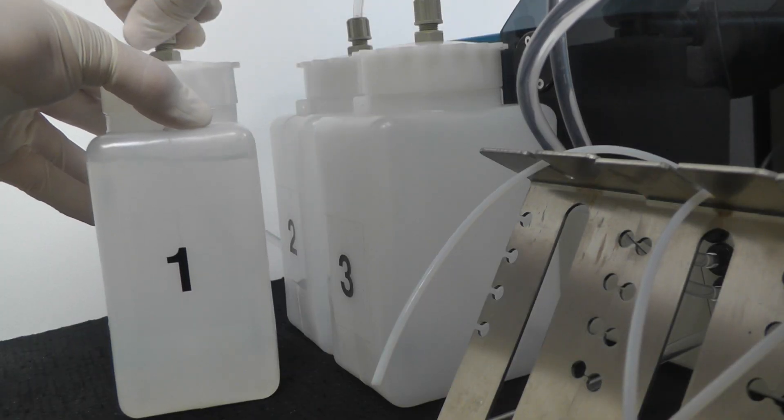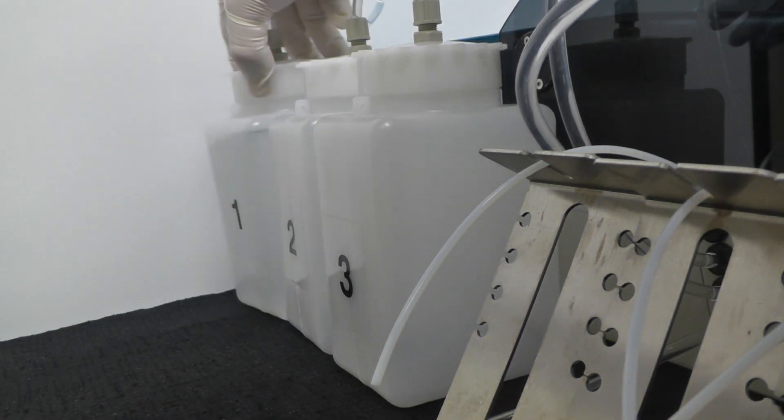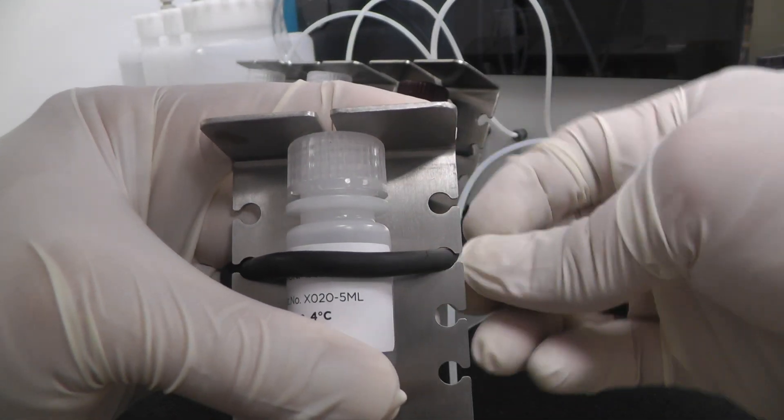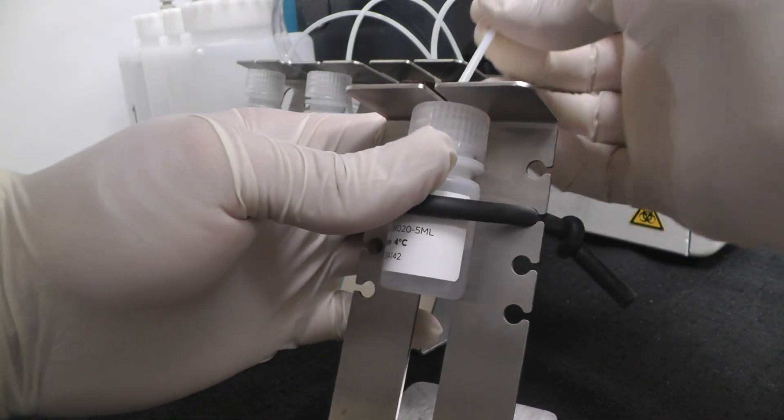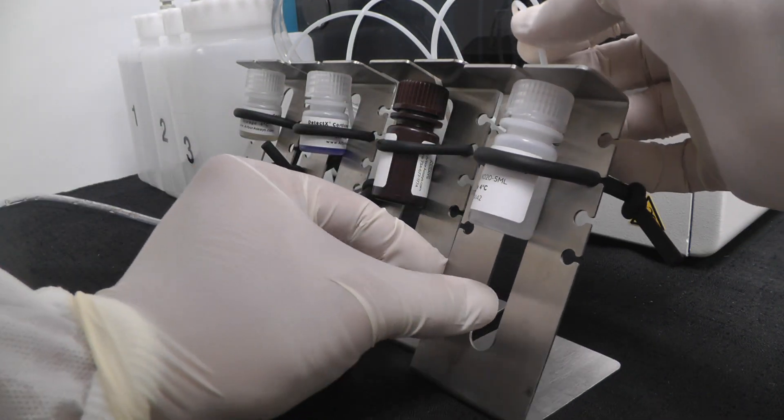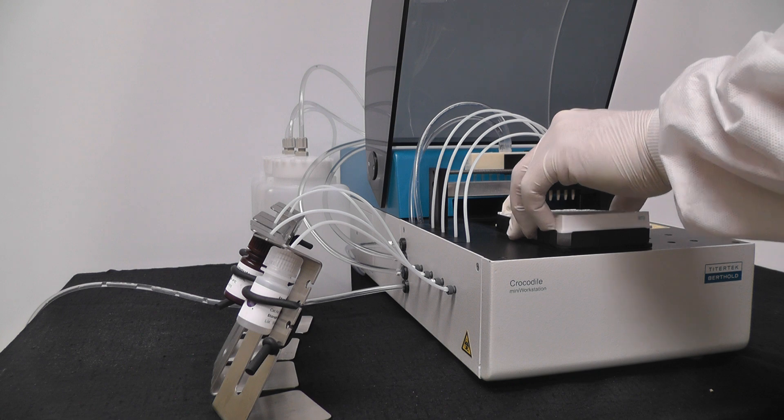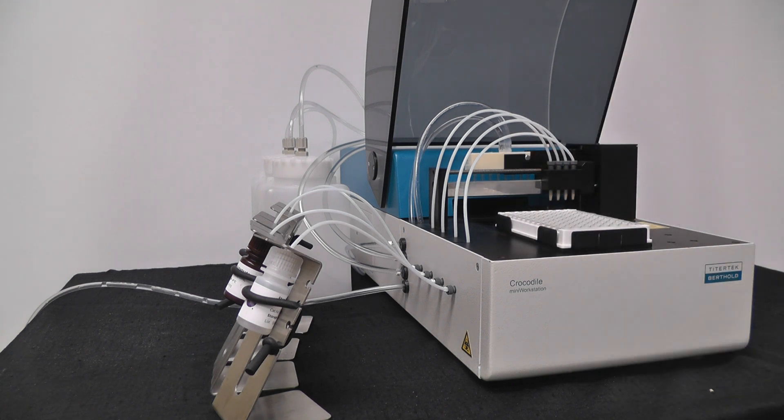The Crocodile Mini Workstation is prepared by connecting the wash connection to our prepared wash buffer. Then, the provided reagent bottles are connected to each of the small volume dispensers. Now the Crocodile Mini Workstation is ready to start.